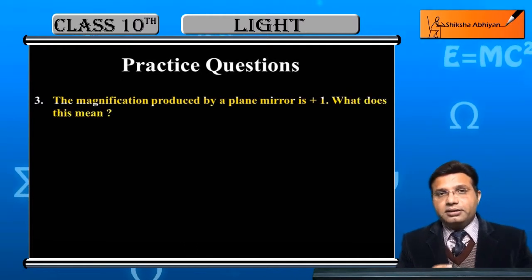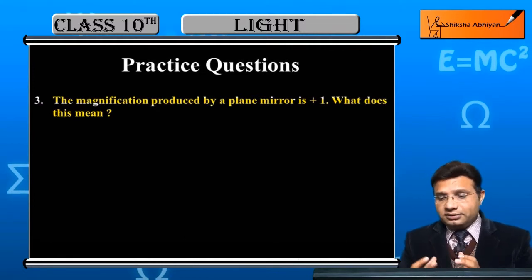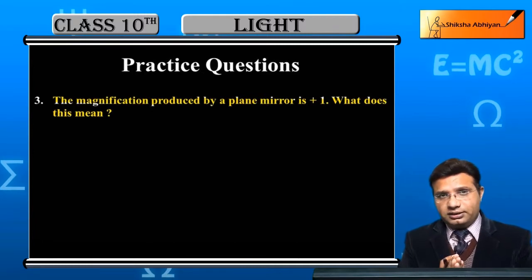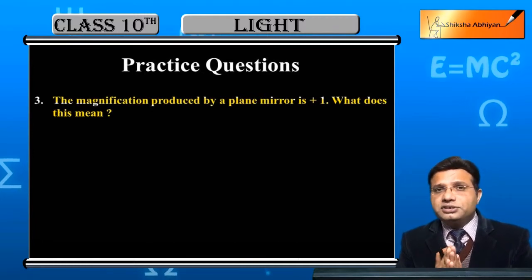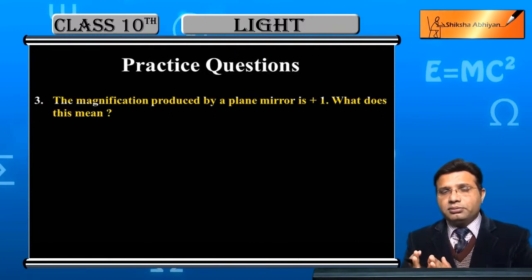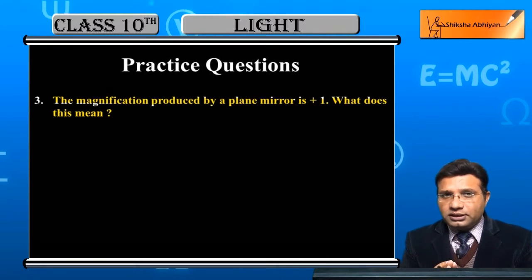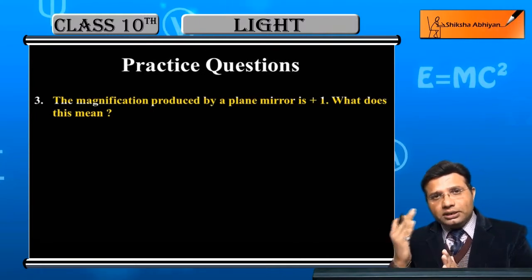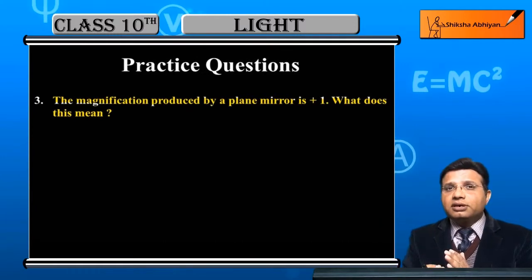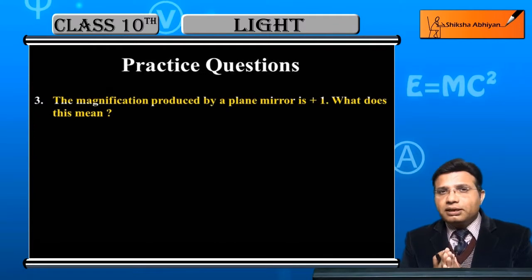The magnification value is plus 1. What is the meaning of this magnification value? When we put the object in front of the mirror, how is the image of the object — is it small, is it big, is it magnified? What is the meaning of the magnification?